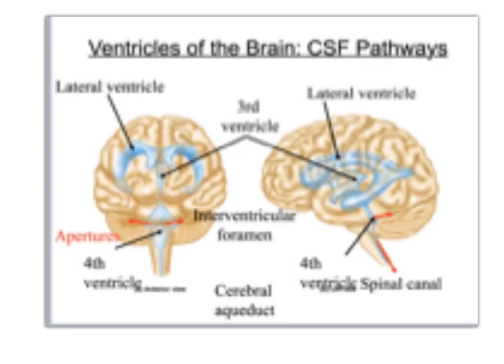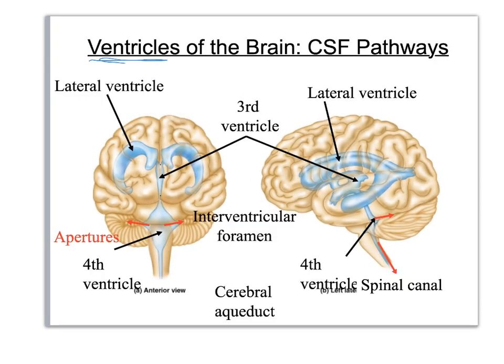Now we are going to look at the ventricles and cerebrospinal fluid. I think of the ventricles as cavities filled with CSF. This can be difficult to visualize because all the pictures you see are done in these pretty blue colors and it looks like they're solid — but it's not, that's liquid. The blue is representing liquid, and if you take away the liquid you've got an empty cavity.